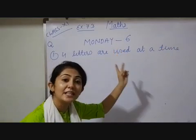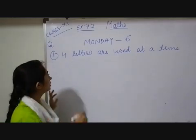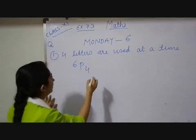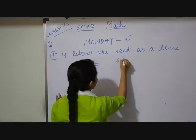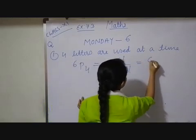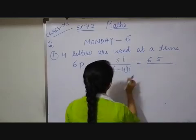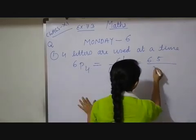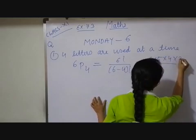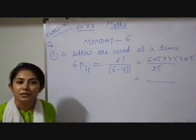Among six letters, how many do I have to use? Four letters. So it will be 6P4. Your answer will be 6 factorial upon (6 minus 4) factorial, that is 6 into 5 into — in the denominator, 6 minus 4 is 2 factorial — so 4 into 3 into 2, cancel, multiply, and you can get your answer.